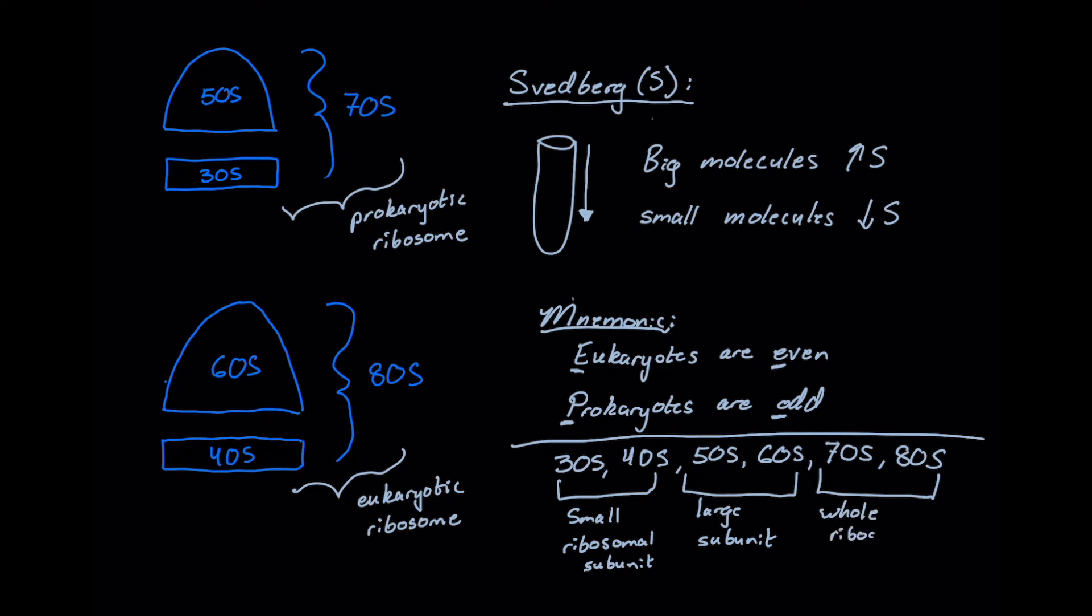And you may be asking yourself, well if the small is 30 and the large is 50, how come this isn't 80? And that's a great question. And that's because Svedbergs don't add up perfectly. And the reason for that is because they are basically taking a look at sedimentation coefficients rather than actual molecular weight, so they don't add up perfectly.